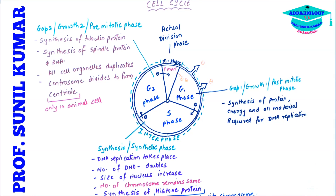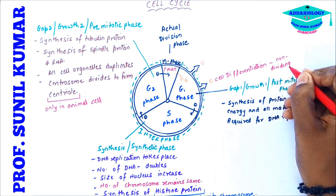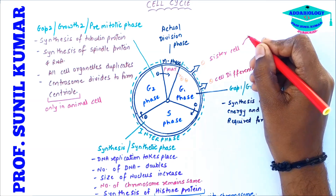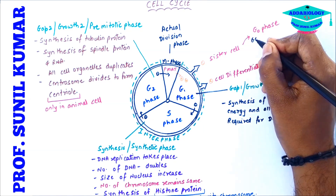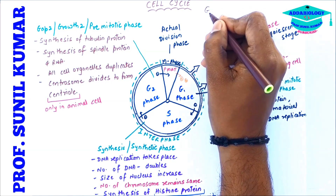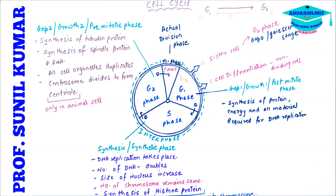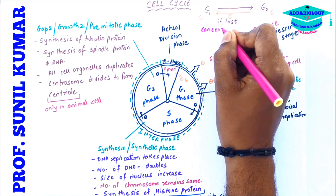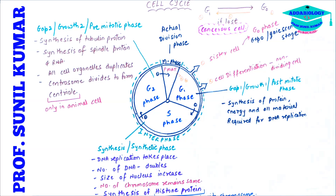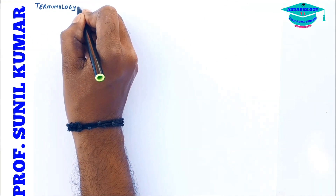After M phase, daughter cells have one opportunity to withdraw from the cell cycle and undergo differentiation, becoming permanent or non-dividing cells. Sometimes they withdraw but don't become permanent — they go into G0 phase, called the quiescent stage. From the quiescent stage, the cell can re-enter G1 phase to continue the cell cycle. If a cell leaves G0 but does not enter G1 phase, it is lost, and that cell becomes a cancerous cell. So loss of cell cycle control leads to the formation of cancerous cells.